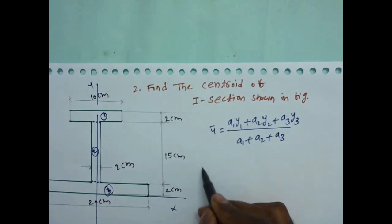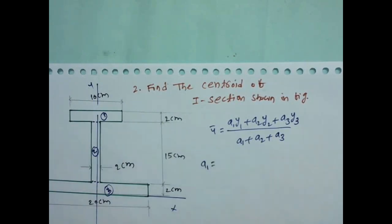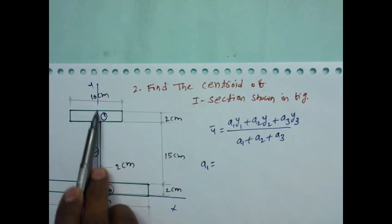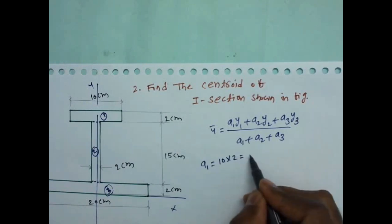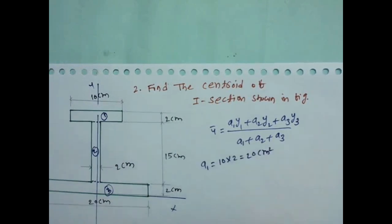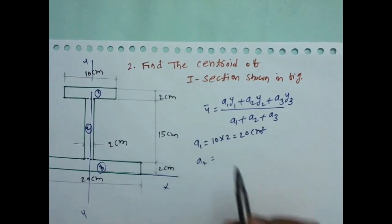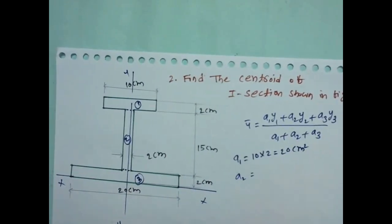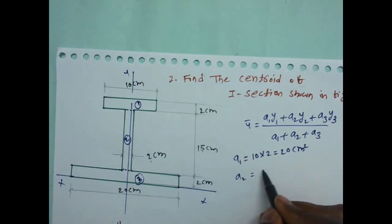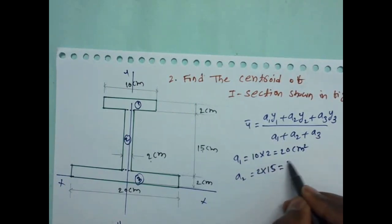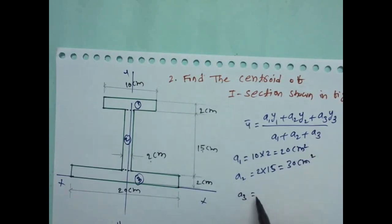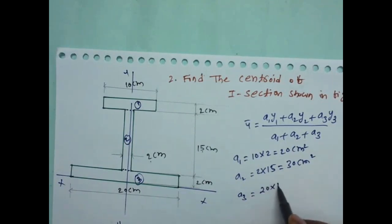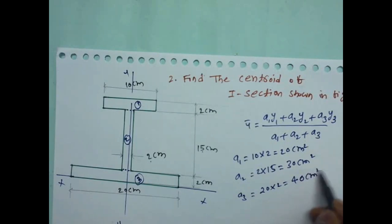First we find the areas. A1 is the area of the first rectangle with dimension 10 by 2, so A1 = 10 × 2 = 20 cm². A2 is the area of the second rectangle with dimension 2 by 15, so A2 = 2 × 15 = 30 cm². A3 is the area of the third rectangle with dimension 20 by 2, so A3 = 20 × 2 = 40 cm².